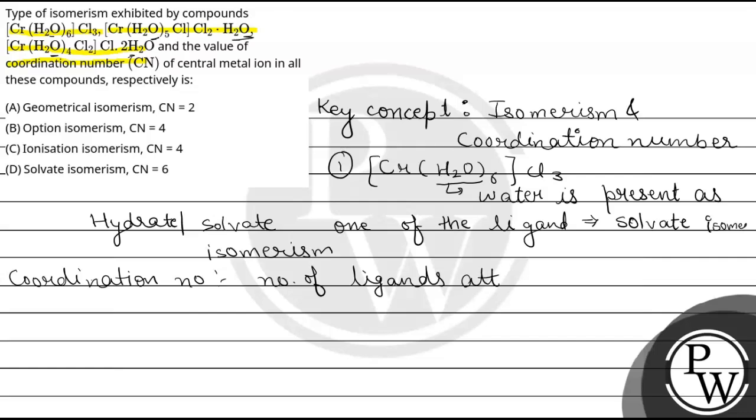It's the number of ligands attached with the central metal atom multiplied by its denticity. Denticity means how many donor atoms it has.